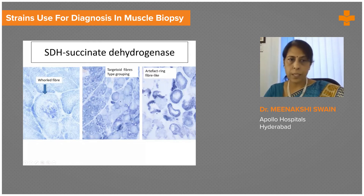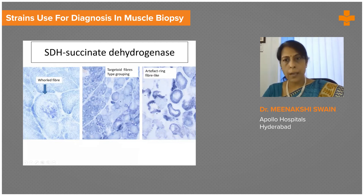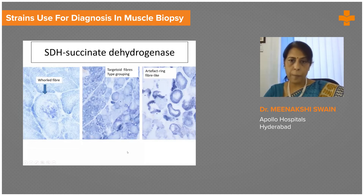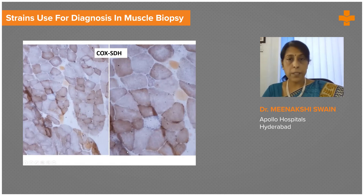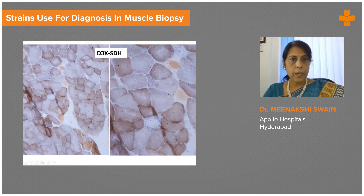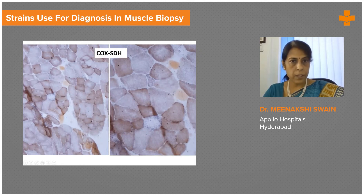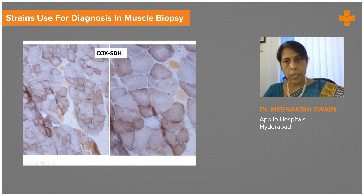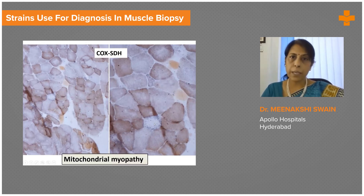Other special features include whorled fibers, which are seen in limb-girdle muscular dystrophies and in a number of other conditions. One also needs to be aware of freeze artifacts, which can give rise to ring fiber-like appearances that must not be misinterpreted. The COX-SDH stain combines cytochrome C oxidase (COX), an enzyme present in mitochondria, with SDH. Absence of COX activity indicates mitochondrial disease. Normal fibers are brown; in a normal muscle, most fibers would be brown. Pale blue fibers counter-stained by SDH indicate COX deficiency, pointing to mitochondrial myopathy.